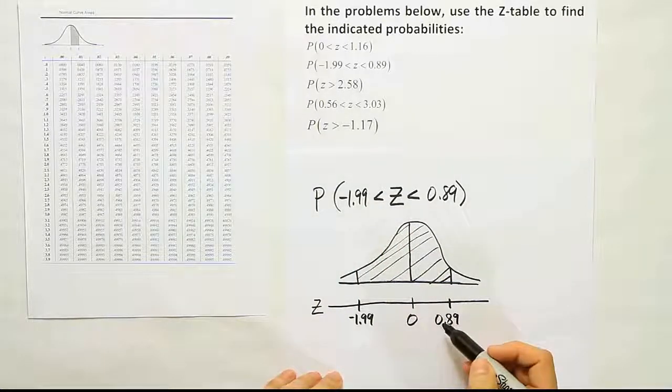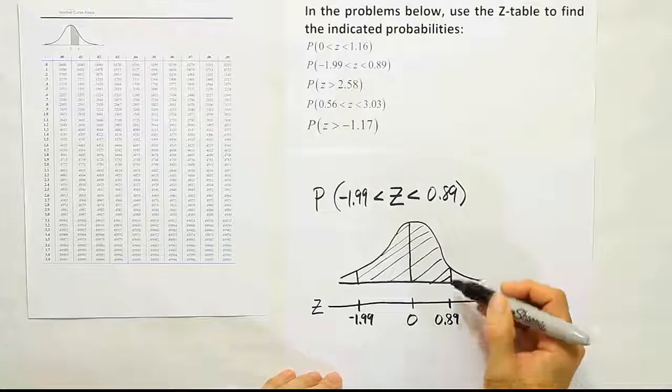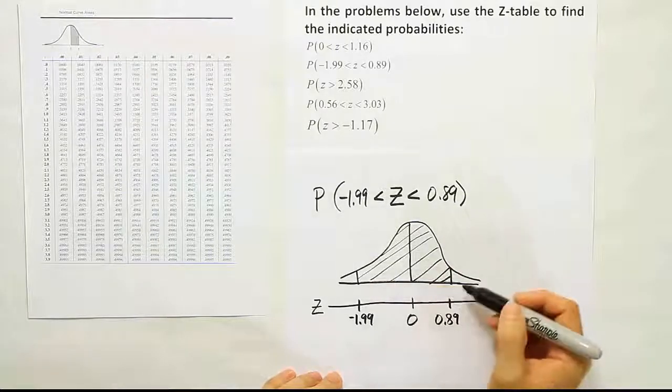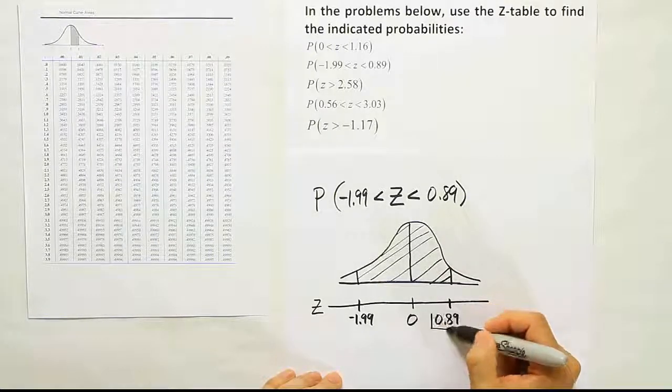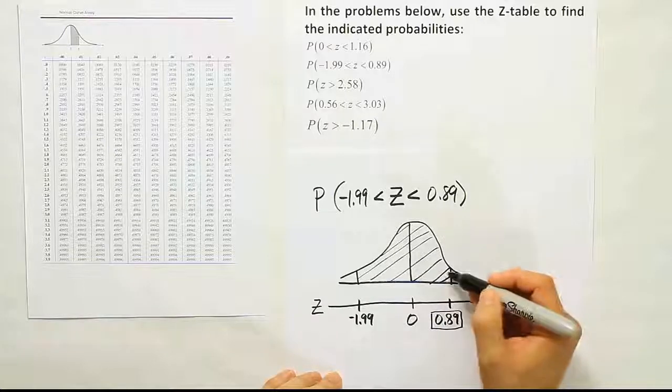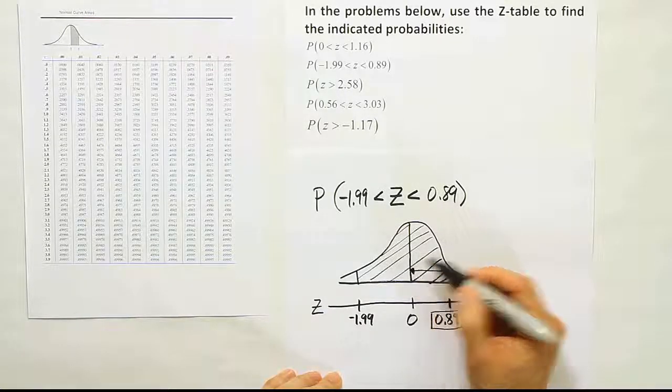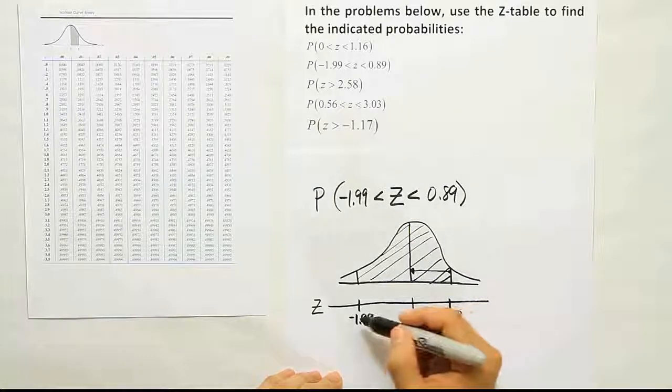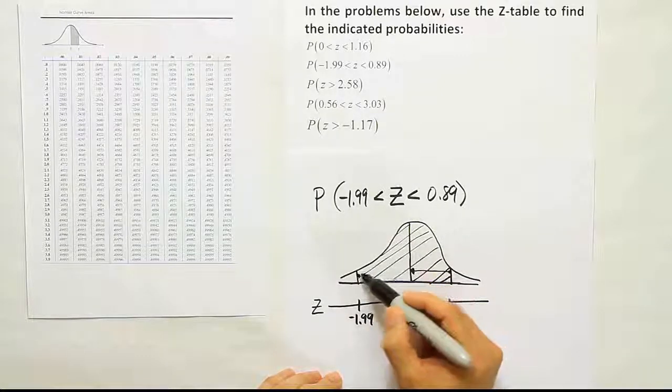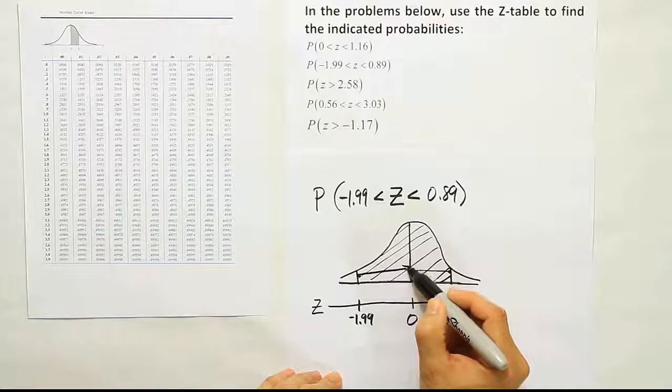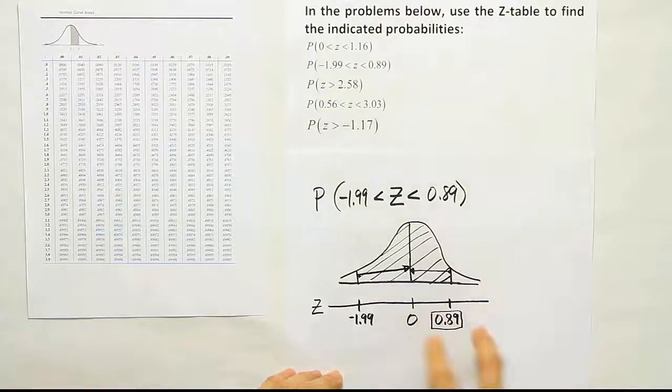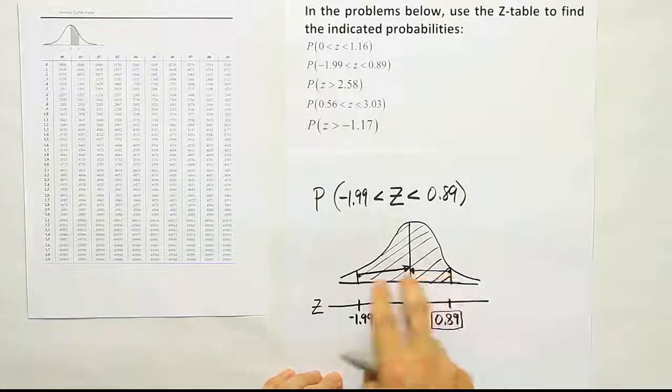So, let's think about what's going to happen when we go to the table. When we go to the table, once we have our drawing shaded, that's when we go to our table. When we go to the table we're going to look up this z score. When I look up that z score it's going to give me the area from that line to the center because that's how our table reads. If I look up this number it's going to give me the area from this line to the center because that's how the table always reads. We're going to have two separate results then from the table.